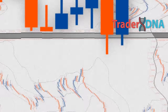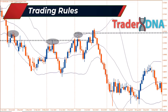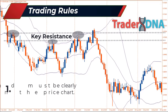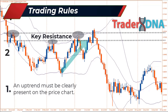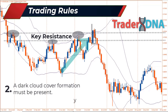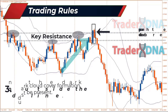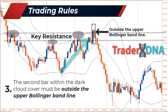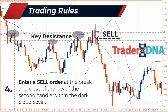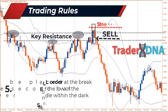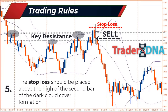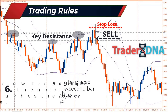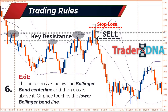Here are the rules for entering a short position using Bollinger Bands. The recommended time frame is the daily chart. First, an uptrend must be clearly present. Second, a dark cloud cover formation must be present. Third, the second bar must be outside the upper Bollinger Band line. Fourth, enter a sell order at the break and close of the low of the second candle. Fifth, place the stop loss above the high of the second bar. Sixth, exit when price crosses below the Bollinger Band center line and closes above it, or when price touches the lower Bollinger Band line — whichever occurs first.